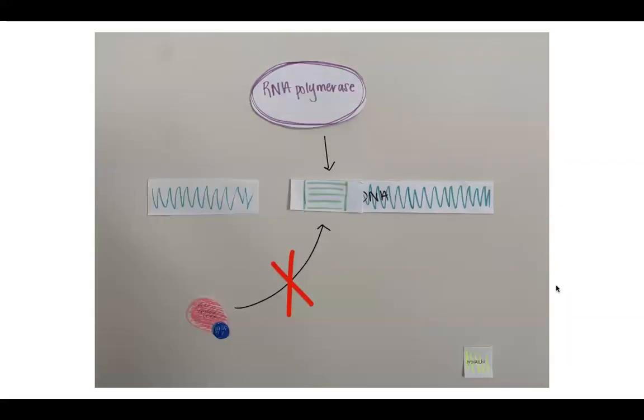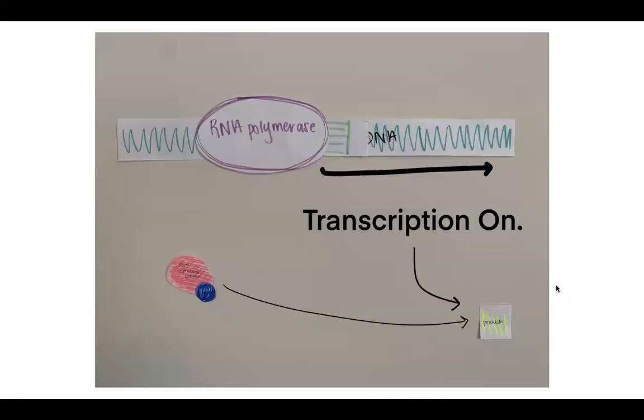What makes this regulation inducible is because when a small molecule, also referred to as the effector, binds to protein, specifically the repressor in this case, transcription would increase because it no longer blocks RNA polymerase from its landing block, the promoter.